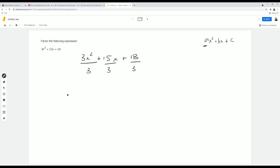So if I divide everything by 3, we're going to have 3 times, the 3's cancel out here, we have x squared. 15x divided by 3 is positive 5x. And then we have 18 divided by 3, which is positive 6.